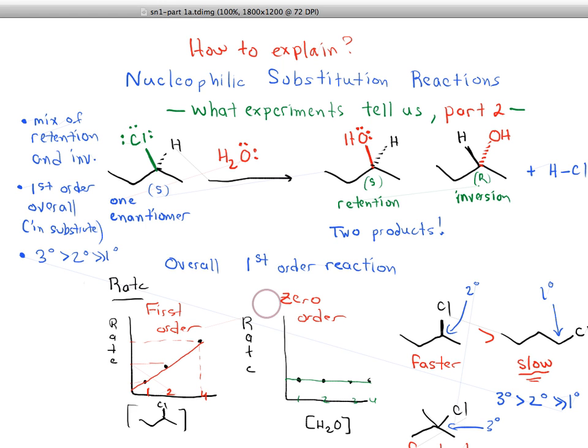In the last video we went through an interesting example of a nucleophilic substitution reaction where we started with one enantiomer of a product and ended up with two. We ended up with retention and inversion, so two different products.